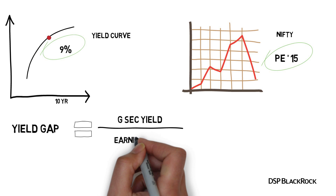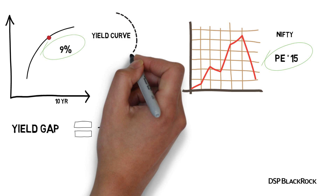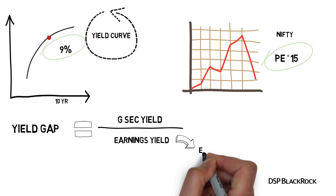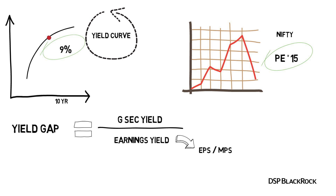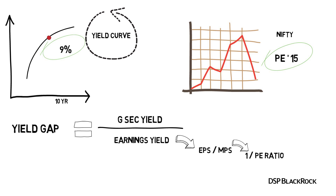The gsec yield is straightforward — it is the yield you can read off the yield curve. You can look at benchmark yields: the one-year, the five-year, the ten-year. The earnings yield is the comparison of earnings per share with the price — EPS divided by the market price. This is simply the inverse of the P/E ratio, so to get the earnings yield, divide one by the P/E ratio.